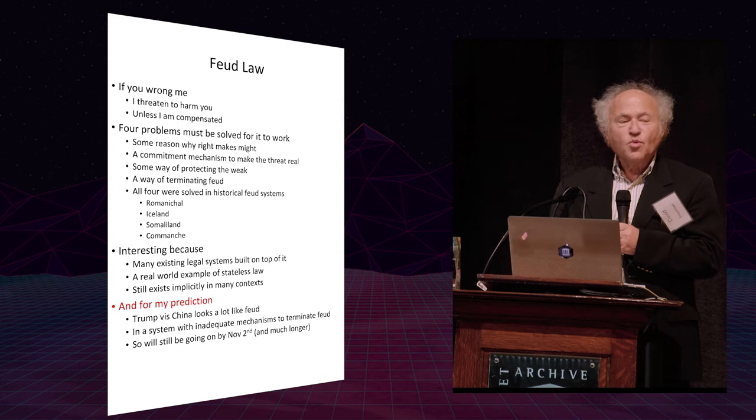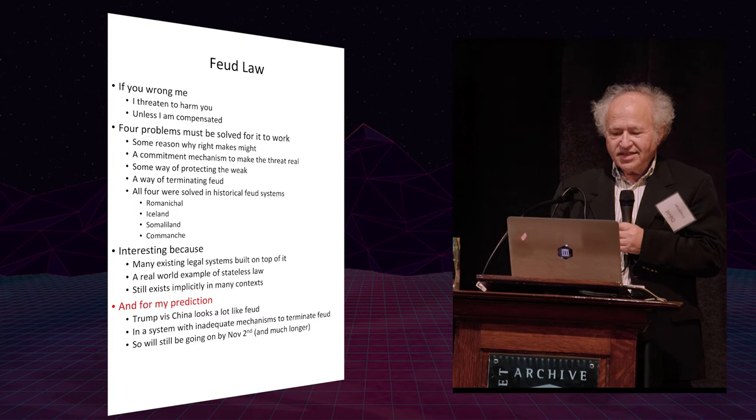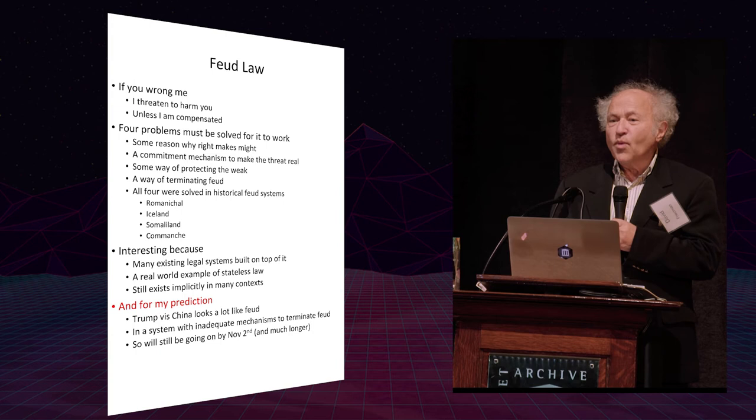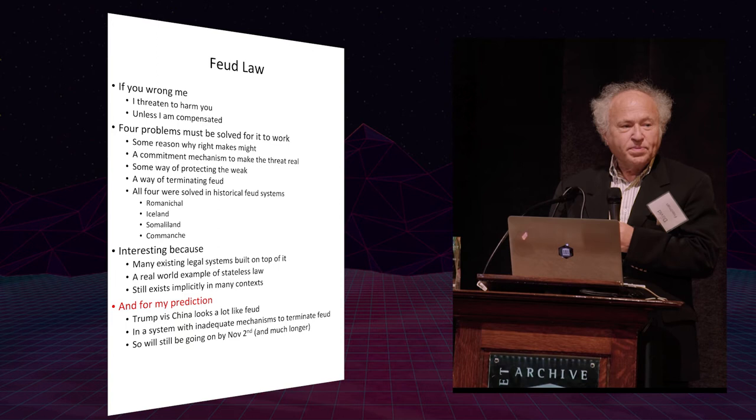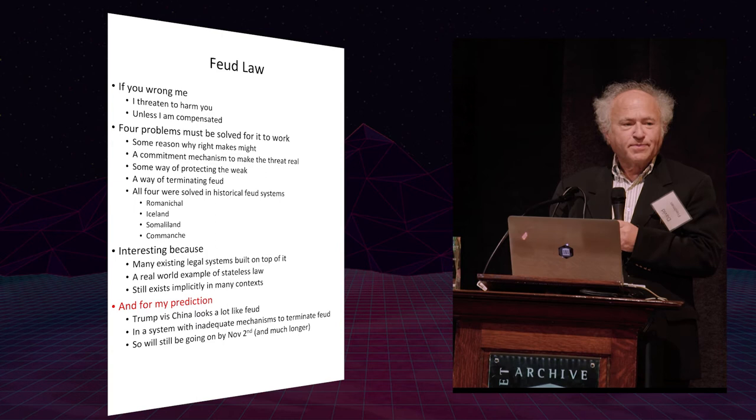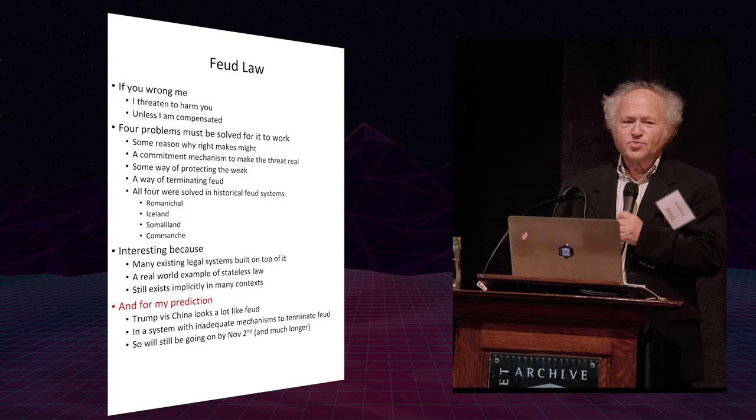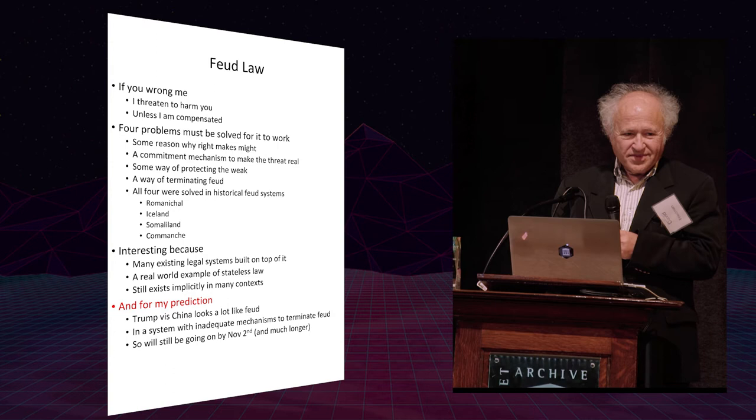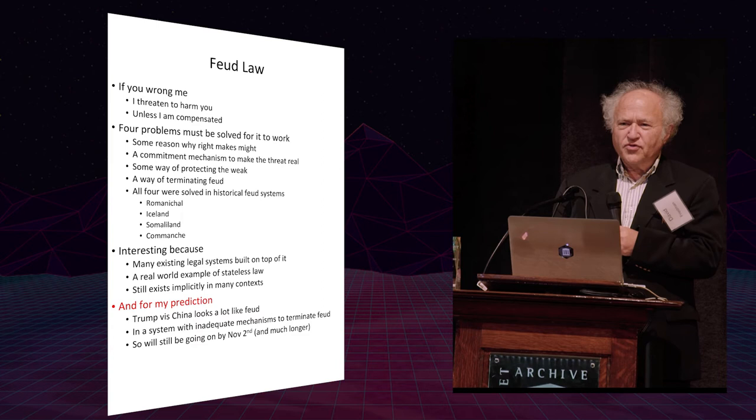And how that is done varies in different societies. The simplest version of a feud system I'm aware of is among the modern Romanichal gypsies, the largest Romani group in England at present. And it's an informal feud system in which what basically happens is that if you have wronged me, I threaten to beat you up unless you compensate me. It's a small enough society so that our friends probably know whether you wronged me, share our set of informal community norms, and therefore if you really wronged me, my friends will back me and your friends won't back you, and the other way around if you didn't. That's a very simple one.